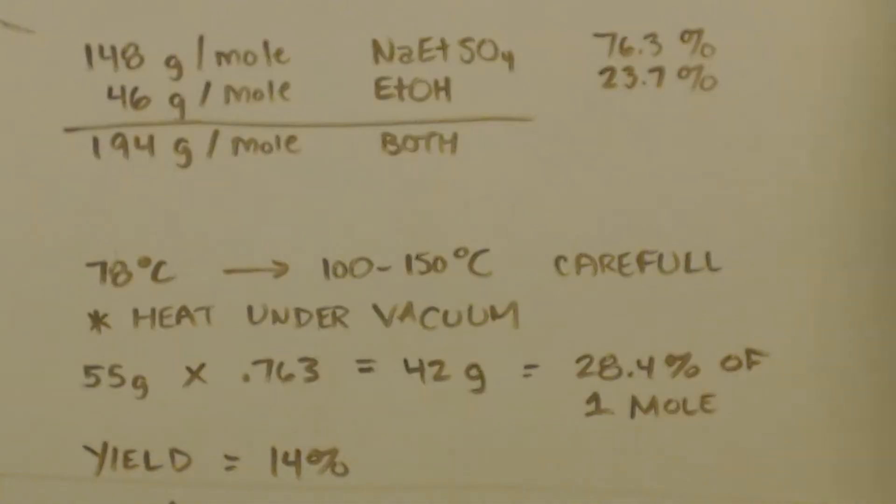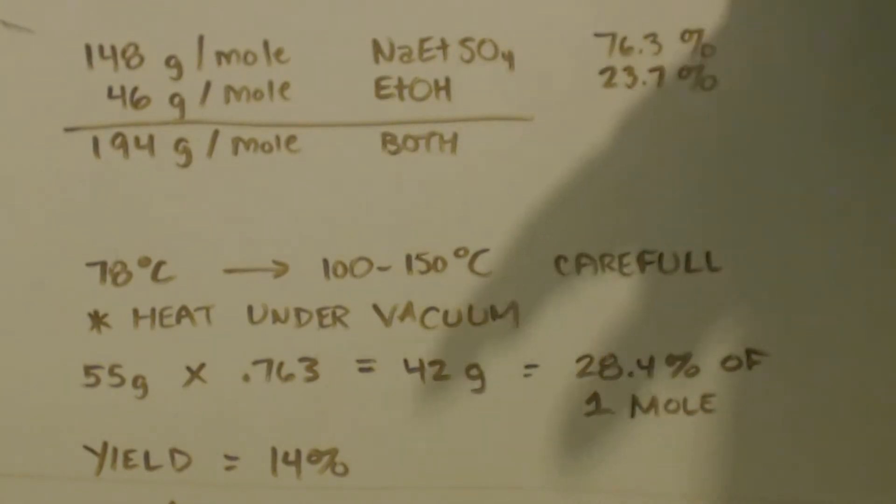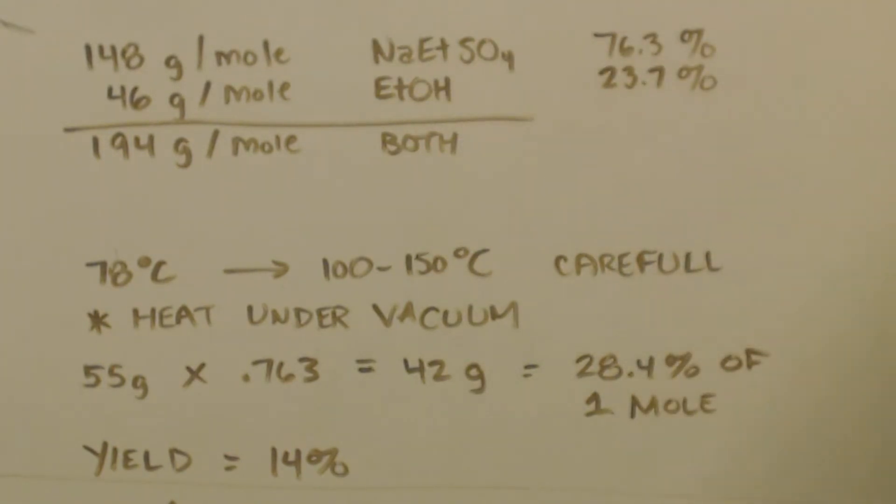So this is part 5 and the final part of sodium ethyl sulfate synthesis. Alright, so I got about 55 grams. I was going to do something extra to this, but I'm not going to. I'm just going to talk about it. You see I got about 55 grams of product there.